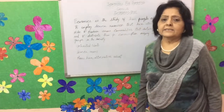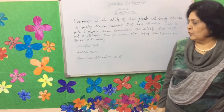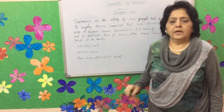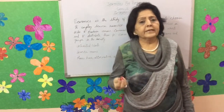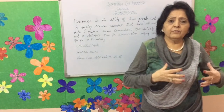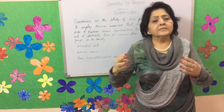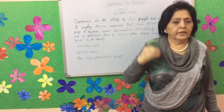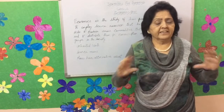Let us understand what this statement means. First, we will go with unlimited wants. Human beings have unlimited wants. Once a few of their wants are satisfied, new ones crop up and the wants keep on growing. They are never satiated.